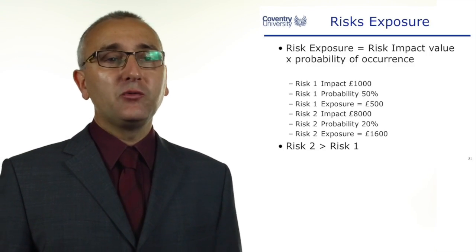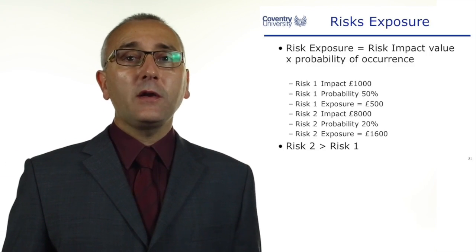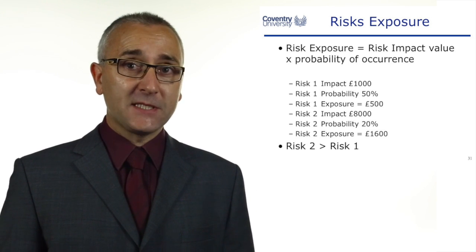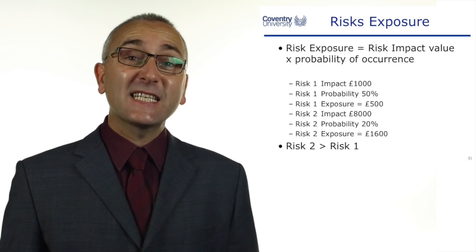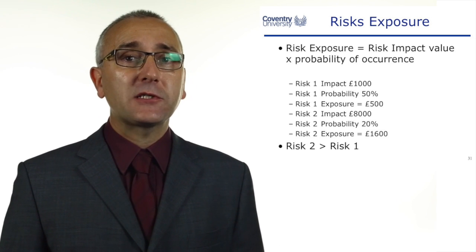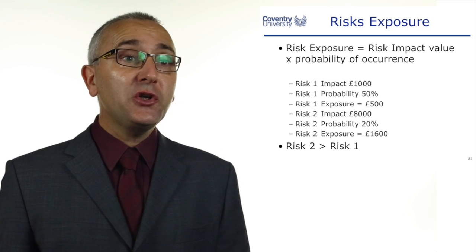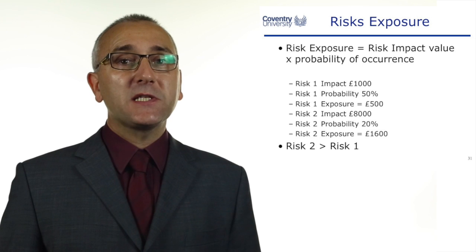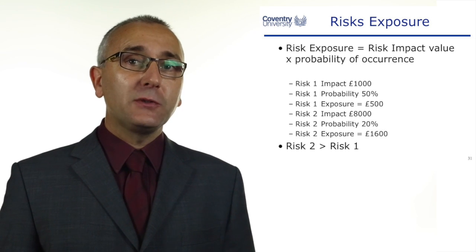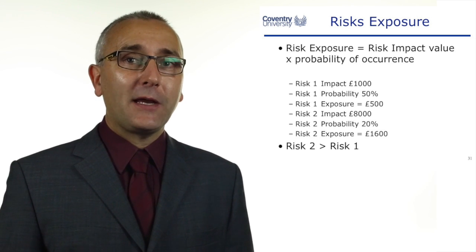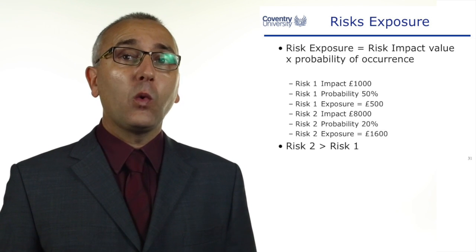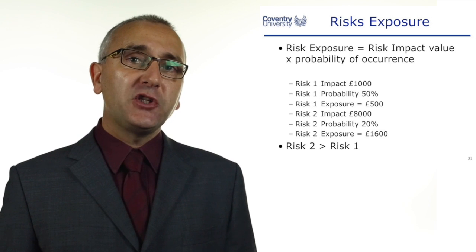Here's an example with two risks. Risk one has an impact cost of £1,000 and a probability of 50%, giving an exposure of £500. Risk two has an impact of £8,000 and a chance of happening of 20%, giving an exposure of £1,600. So risk two is bigger than risk one. Risk exposure gives us a way of comparing risks.